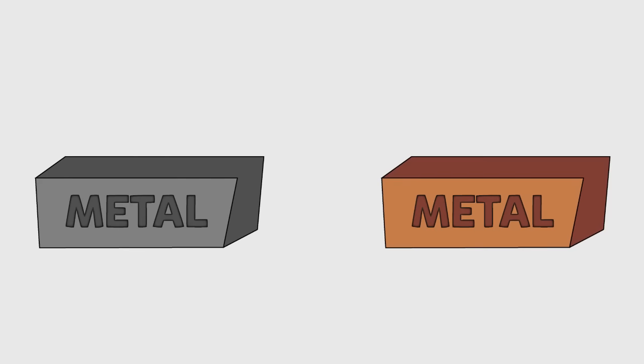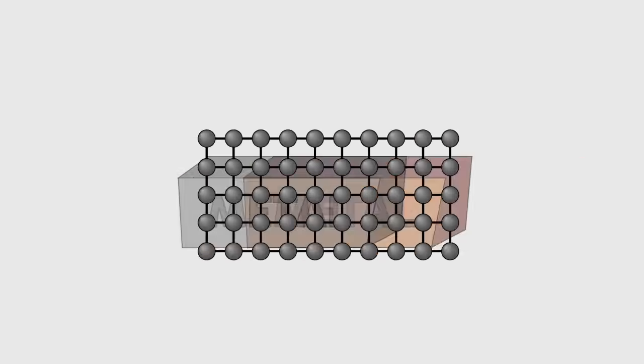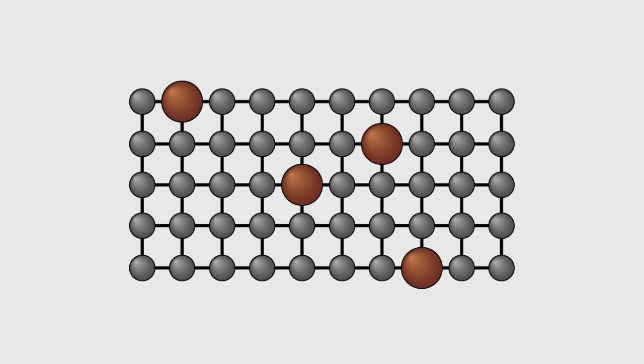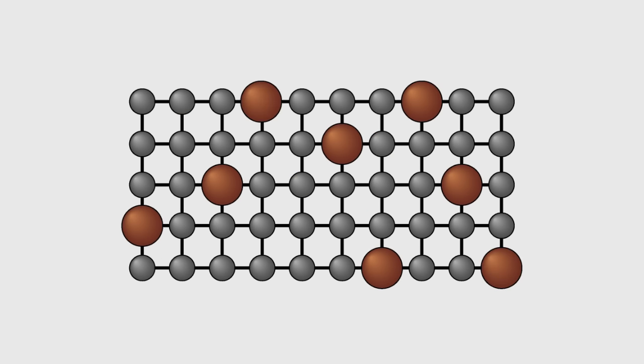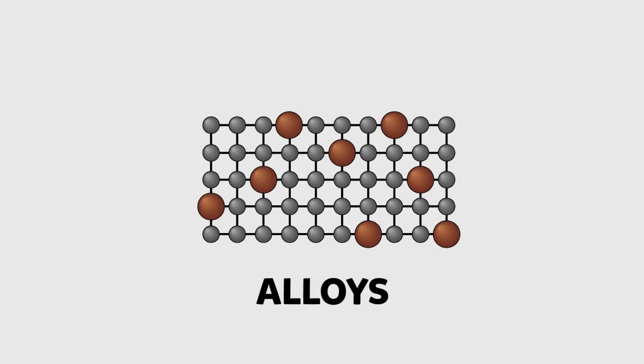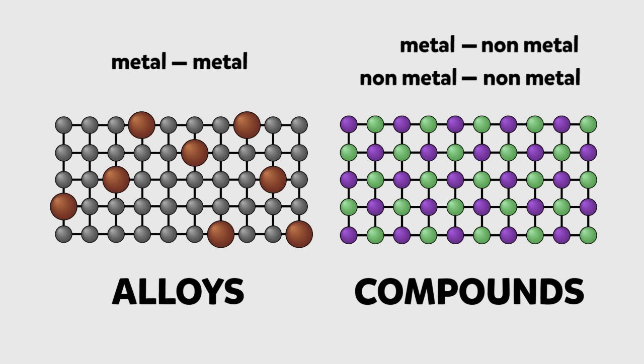It also means that when you try to react metals together, the atoms normally just mix into the lattice forming metallic bonds with each other with no fixed proportions and randomly distributed. These structures are called alloys. Contrast this with compounds between metals and non-metals or between non-metallic elements where the proportions of each element is fixed.